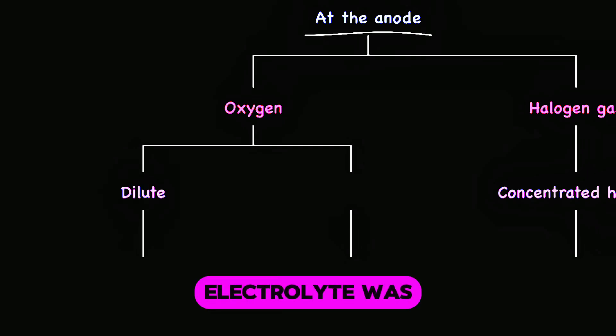If the electrolyte is a dilute solution or if the electrolyte is sulfate or nitrate. In both cases, oxygen is produced from the hydroxide ions in water.